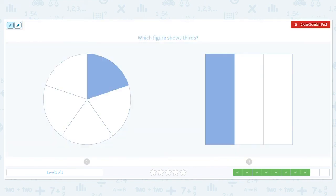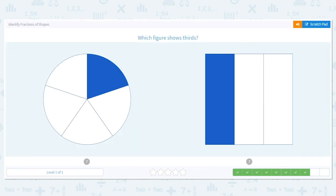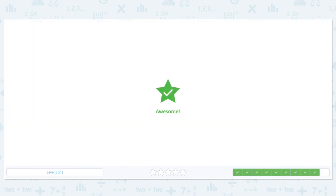How about this picture? Which picture here also shows thirds? Is it the circle or the square? It's the square. Good job. There's three equal pieces.